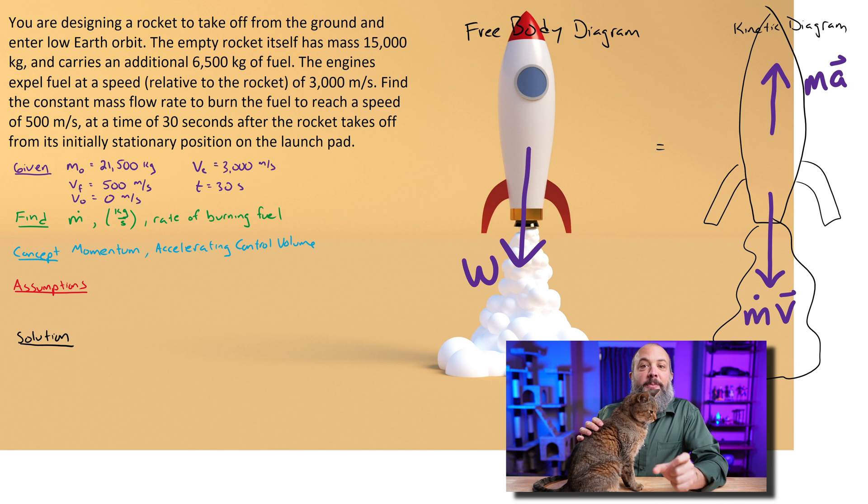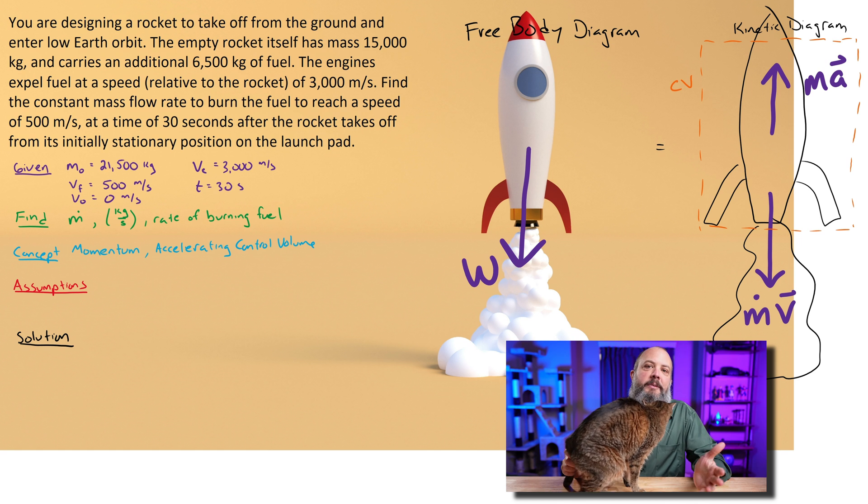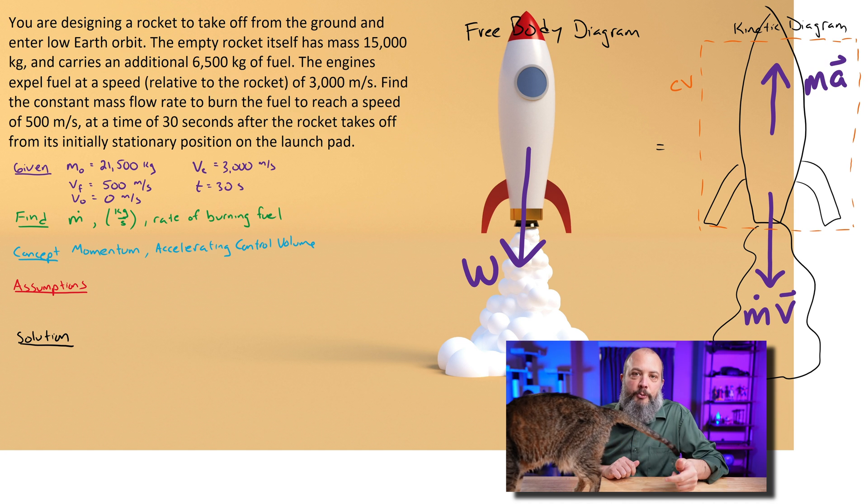Because linear momentum is mass times velocity, so change in momentum is the derivative of either of those terms, either m dot or v dot. So the rocket is moving upwards, so I have my ma term pointing up, and then my m dot v is exiting the control volume downwards. That's where the fuel is being expelled downwards.